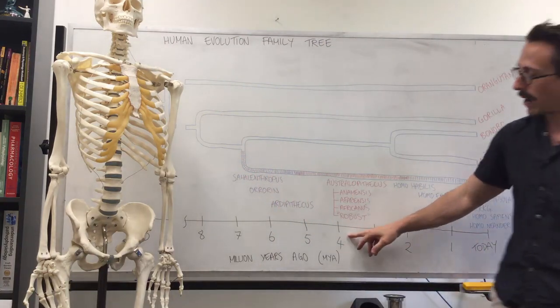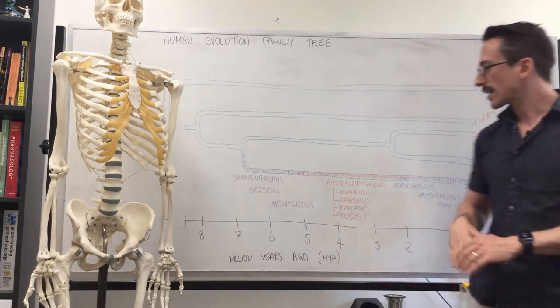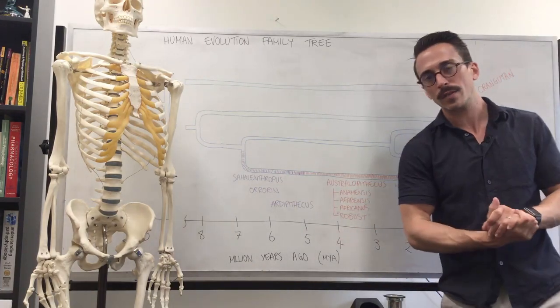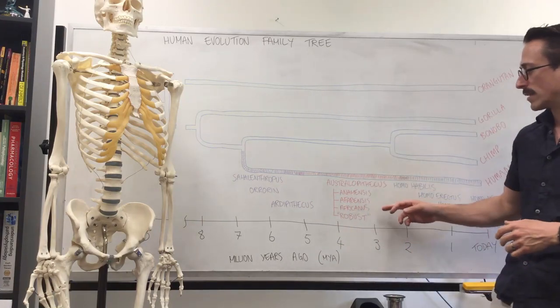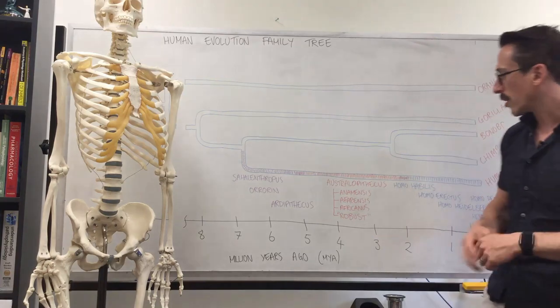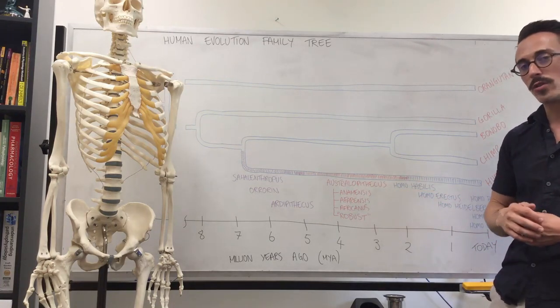By the time we hit around about four million years ago, we have the genus Australopithecus. There's a couple of different sub-categories of these. The most common that you've heard of include Afarensis and Africanus, but there's also Anamensis and the robust Australopithecus.